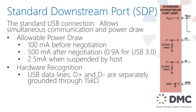In terms of recognizing this port, the USB data lines are pulled to ground through a 15 kilohm resistor — it can go all the way up to 25 kilohms — and this is how a device detects whether or not it has been connected to a standard downstream port.